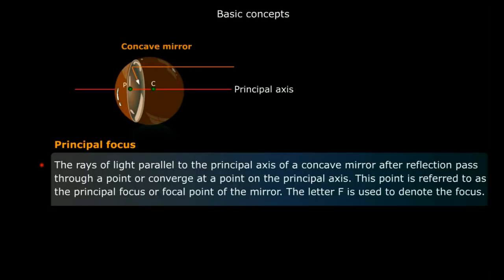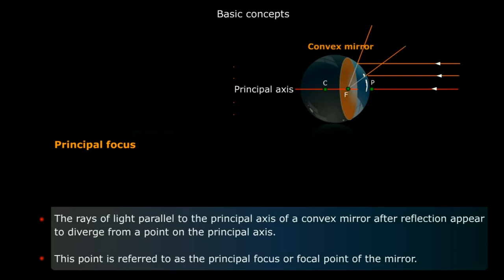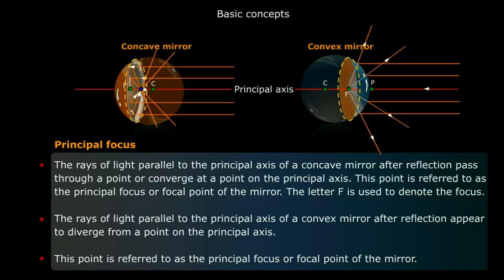Now, principal focus — that is F. The ray of light parallel to the principal axis of a concave mirror, after reflection, passes through or converges at a point on the principal axis. This point is referred to as the principal focus or focal point of the mirror. For a convex mirror, all rays parallel to the principal axis appear to diverge from a point on the principal axis — that point is also known as the focus or focal point.